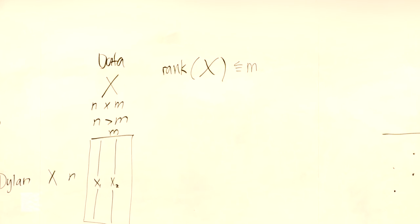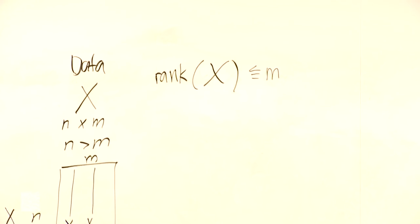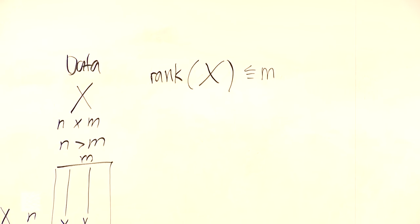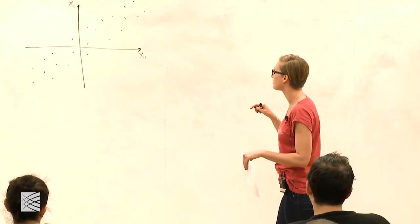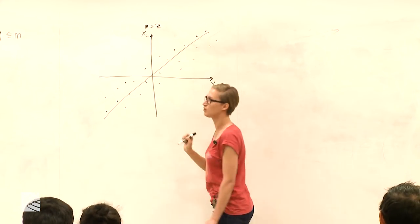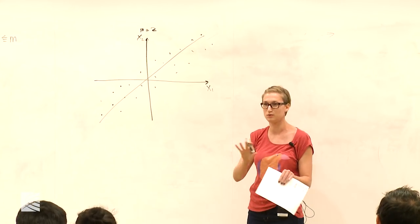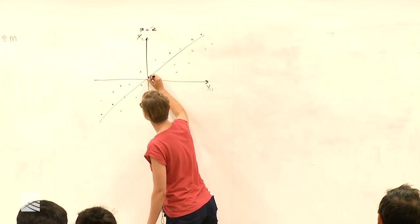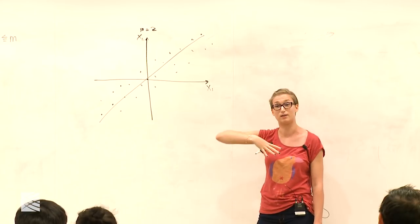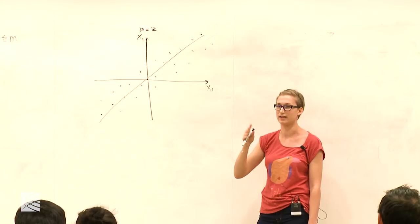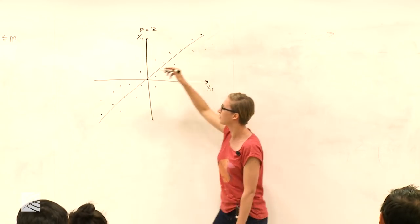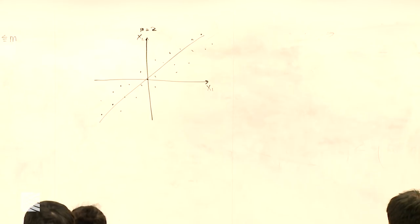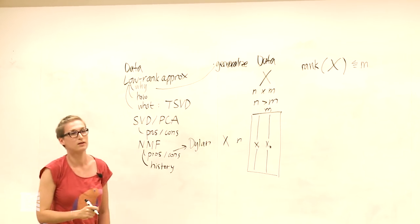So back to squinting. Why might we want to take this data and in some sense reduce it to something with a lower rank — something that is indeed flat? One reason is denoising: if we believe the generative process is actually a line and the deviation is just measurement noise, it makes sense to think of the data as lying on that line. Also, for generalizability — so we can generalize better in our predictions.